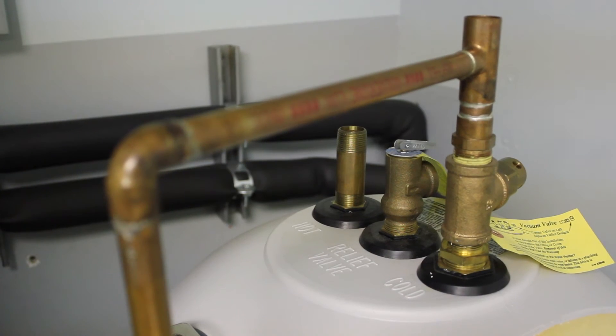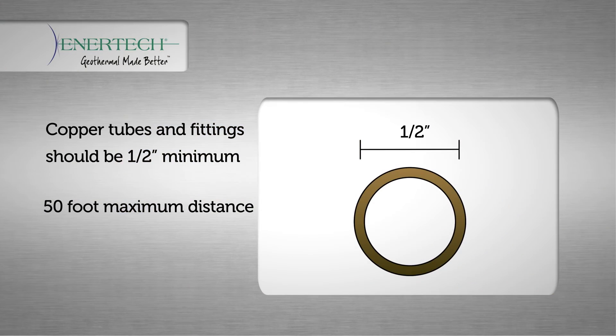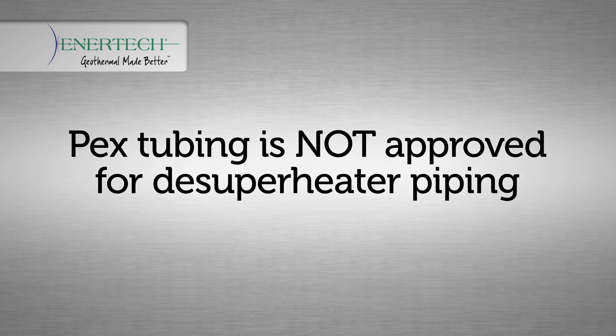All copper tubes and fittings for the desuperheater circuit should be half inch nominal size minimum with a maximum of 50 foot distance one direction. Piping should be insulated with 3/8 inch wall closed cell insulation. PEX tubing is not allowed for use in the desuperheater circuit.